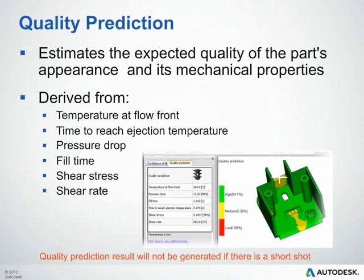The quality prediction plot estimates the expected quality of the part's appearance and mechanical properties. It considers temperature at flow front, time to reach ejection temperature, pressure drop, fill time, shear stresses, and shear rates. One important note: this plot will not be generated if your part shorts, so if you don't see it, make sure your part actually filled.